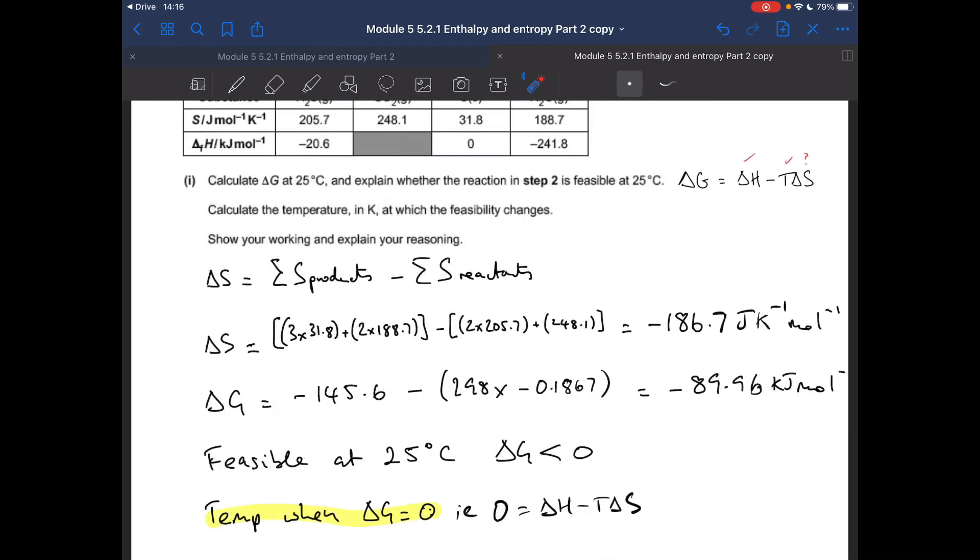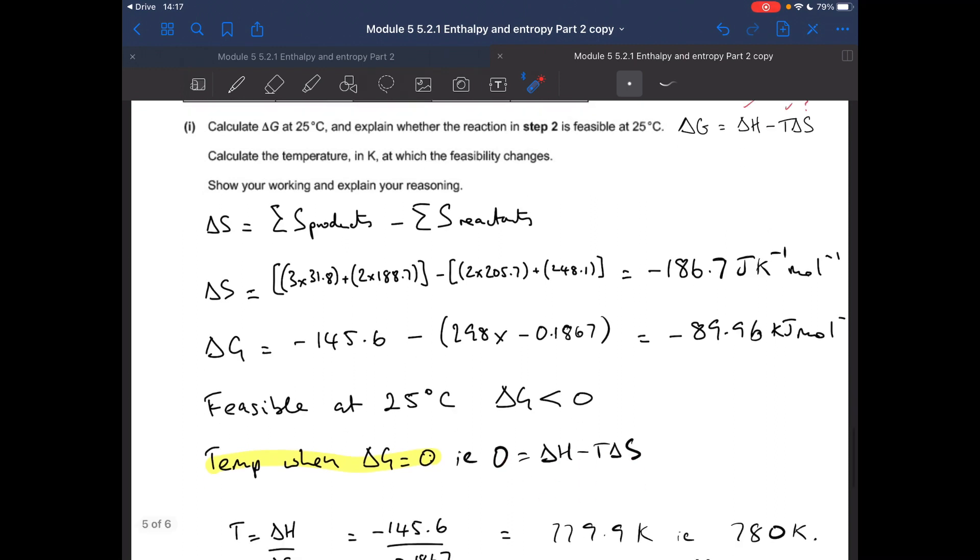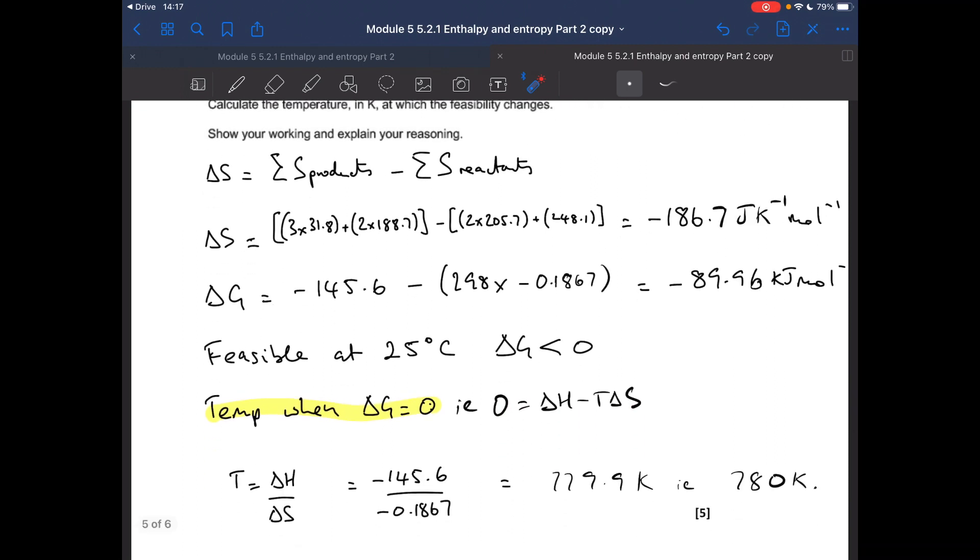For the last part of the question, where we've got to calculate the temperature in kelvin at which the feasibility changes, we're basically finding the temperature that makes delta G equal to zero. So the Gibbs equation becomes that, and then we're just rearranging, subbing the values. So T comes out at 779.9 kelvin, or you could say 780.